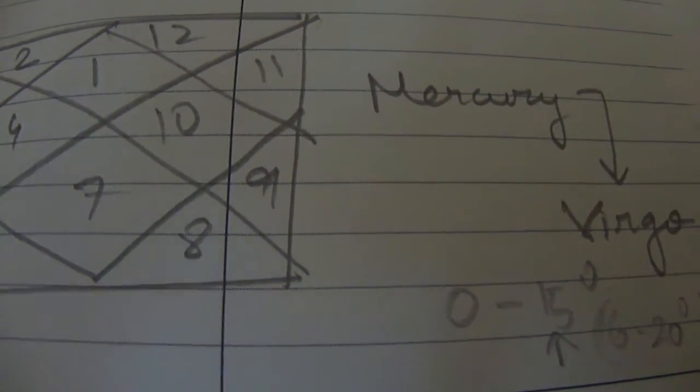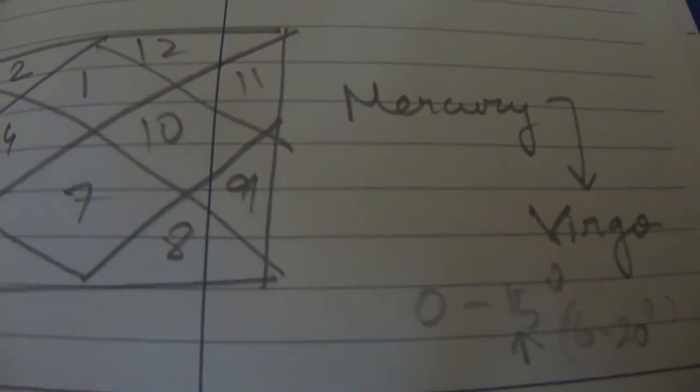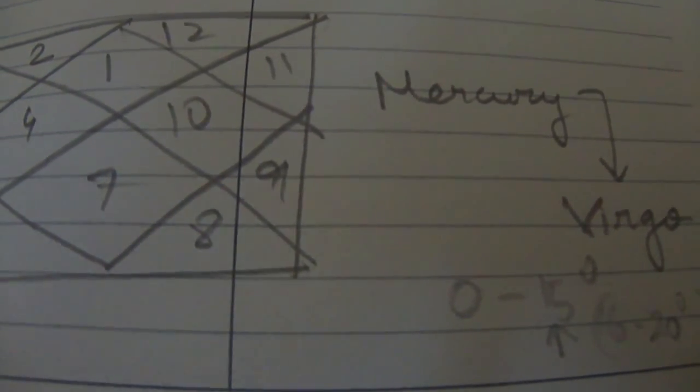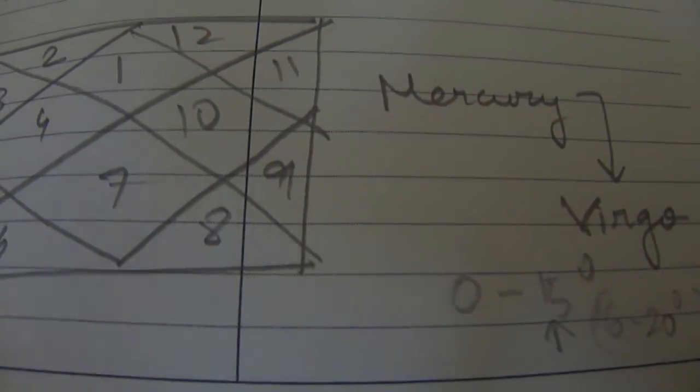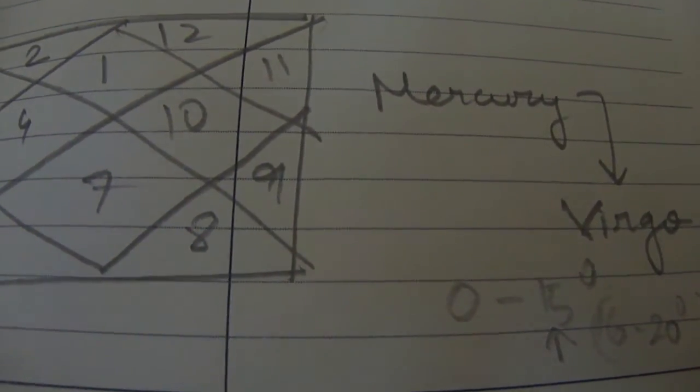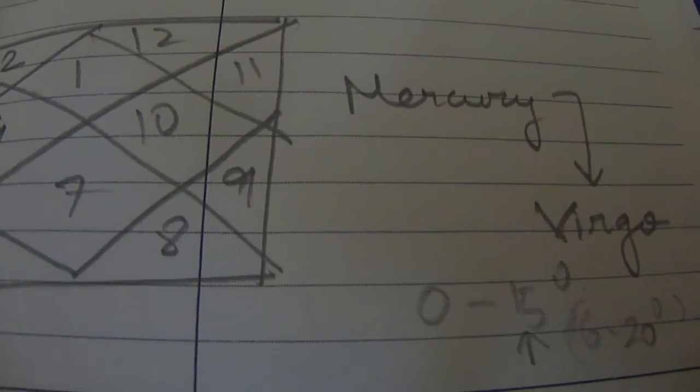Now what happens is that Mercury is a happy and friendly type of planet, but its thought process is quite, it's very fast. It does not want to think that deeply but when it comes to Virgo,